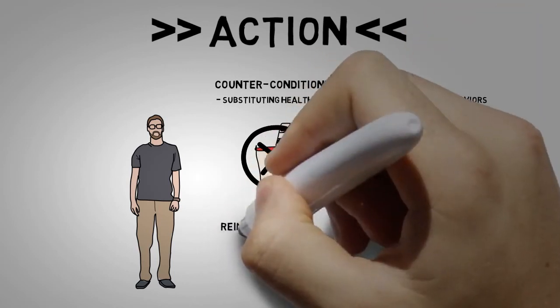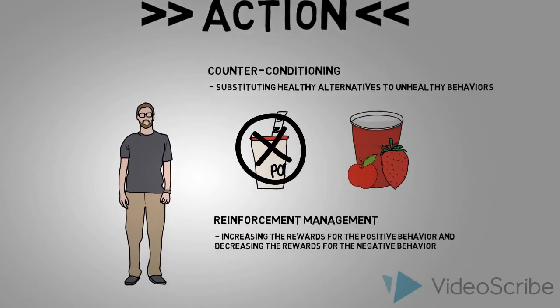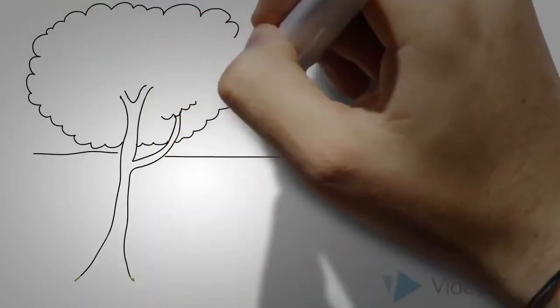Reinforcement management is increasing the rewards for the positive behavior and decreasing the rewards for the negative behavior. Billy has been noticing his old clothes are fitting better again and no longer sees the need for fast food.